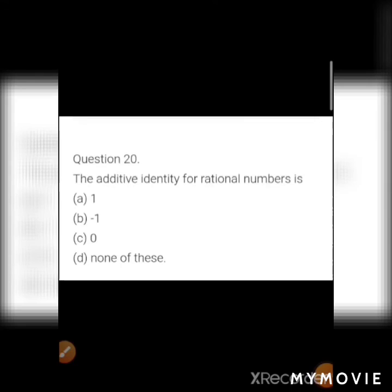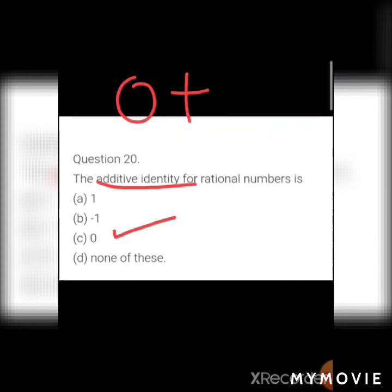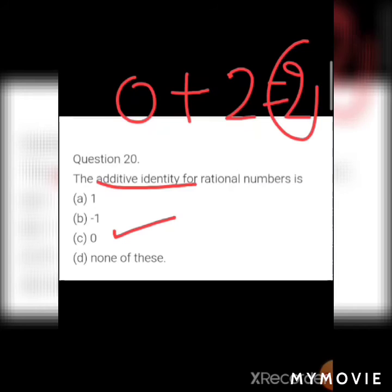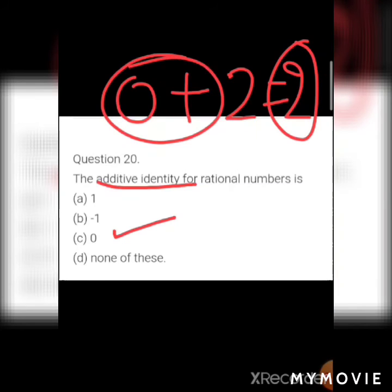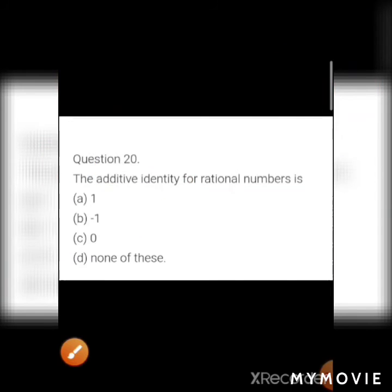MCQ 10: The additive identity for rational numbers is? Options: a) 1, b) −1, c) 0, d) none of these. If you add 0 to any number you get the same number, so the additive identity is 0. Answer: c) 0.